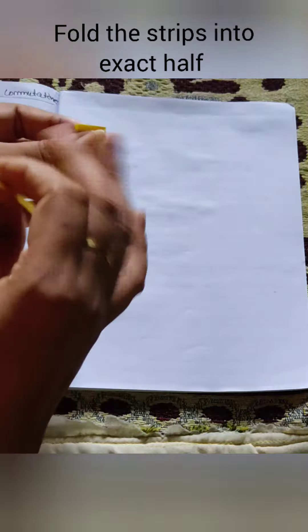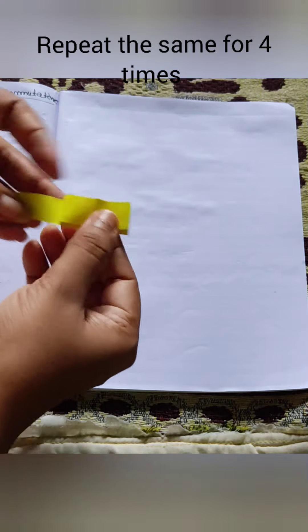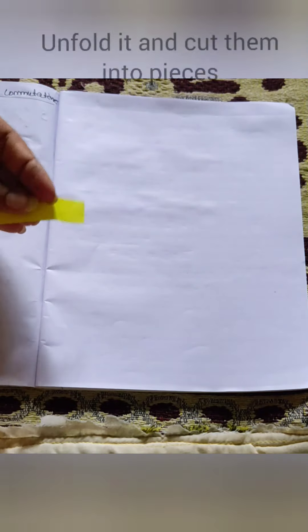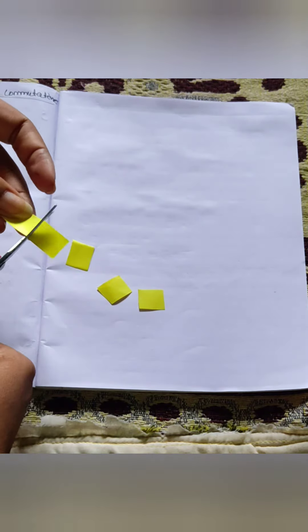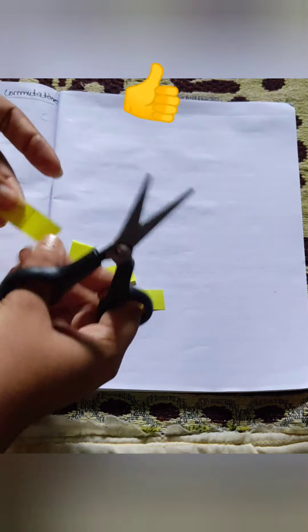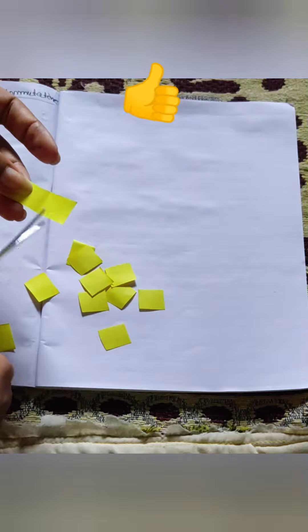Now fold the strips to exact half and repeat the same four times. Unfold it and cut them into pieces. Here we can directly get the small square strips. If you like this video, then don't forget to turn white from blue.